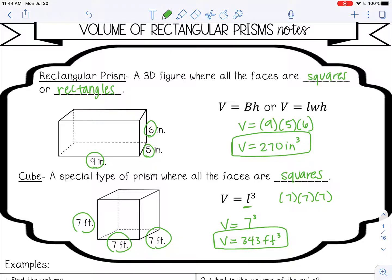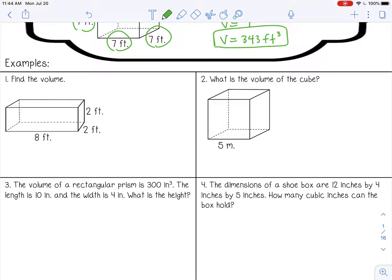All right, let's try some examples below. So number one, it says find the volume. So the volume equals base times height or length times width times height. So eight times two times two, which would give us 32 feet cubed.